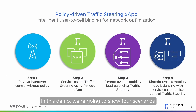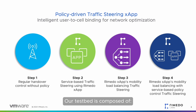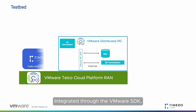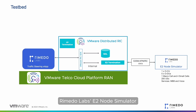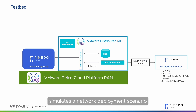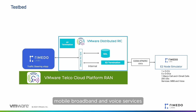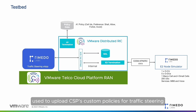In this demo, we are going to show four scenarios based on the different traffic steering features of the X-App. Our testbed is composed of the VMware distributed RIC, offering E2, A1, and shared data layer database services to the application. Integrated through the VMware SDK, we have Remedo Labs X-App. The E2 node simulator simulates a network deployment scenario with one CU, five DUs, five cells — one macro and four small cells — and 250 mobile devices accessing mobile broadband and voice services. The testbed is completed with an A1 policy data file used to upload CSP's custom policies for traffic steering.